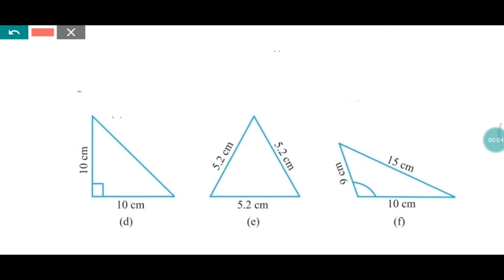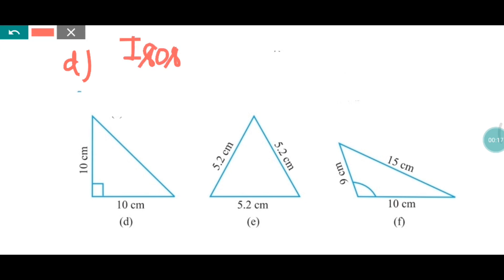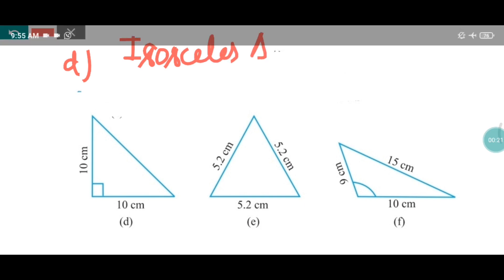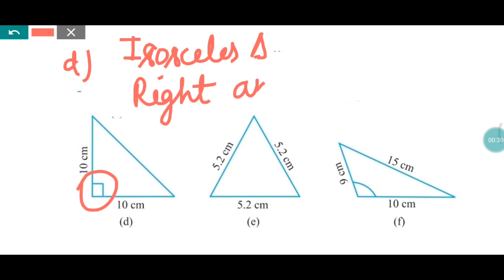Now here we are doing part D. You can see both sides are 10cm — the first side is 10cm and the second side is 10cm. That is why it is an isosceles triangle, because two sides are equal. Now here you can see one angle is 90 degrees, so it is a right angle triangle. This triangle is isosceles and right angle triangle.